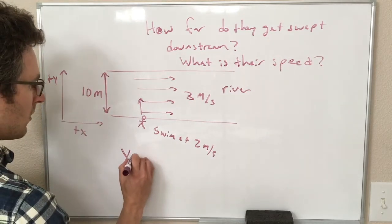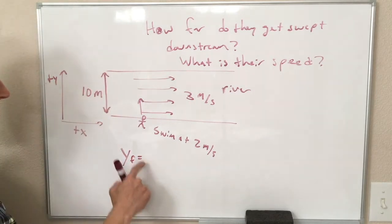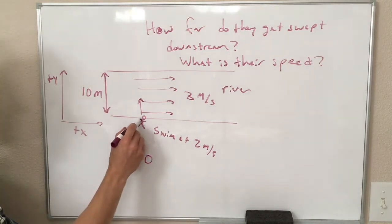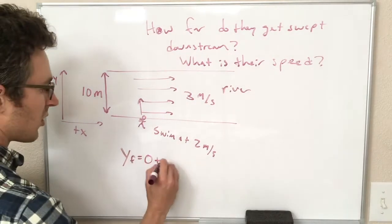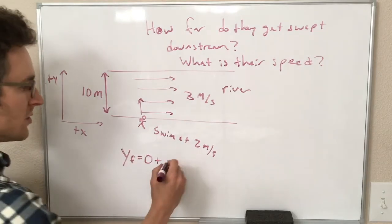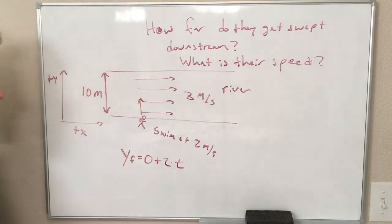after some amount of time, is going to be equal to their initial y position, which we're calling 0, this is the origin, plus their y velocity, which is 2 meters per second times time.